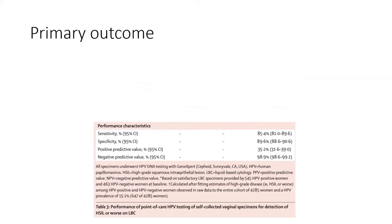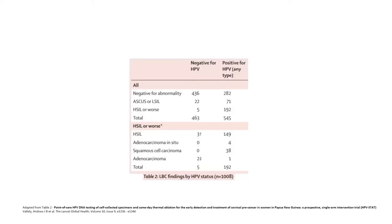The estimated performance was calculated after fitting estimates of high-grade disease within the entire cohort of 4,285 women. This yielded a sensitivity of 85.4%, specificity of 89.6%, positive predictive value of 35.2%, and negative predictive value of 98.9%. Of note, some cases of HSIL or worse were missed among those testing HPV-negative. Breaking this down, of five patients with HSIL or worse missed, three had HSIL and two had adenocarcinoma. The authors considered that these adenocarcinomas were HPV-independent, which may explain why they returned a negative HPV test.